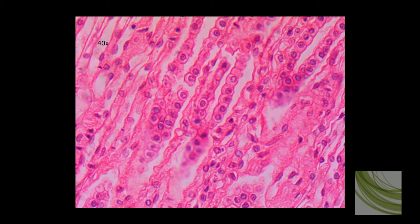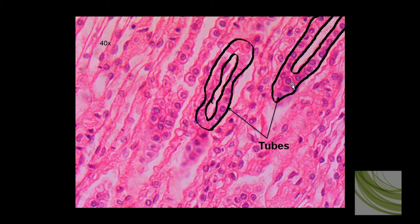Here is the slide using the 40X objective, and we can see tubules, and each one of these little cells is a simple cuboidal — one layer of a cuboidal cell. We've got several tubules here, and I've outlined two of them for you. That's the best way to find or identify this tissue: look for these tubules. You can find the lumen inside, and you'll see one layer of these square-like cells lining each of these tubules.